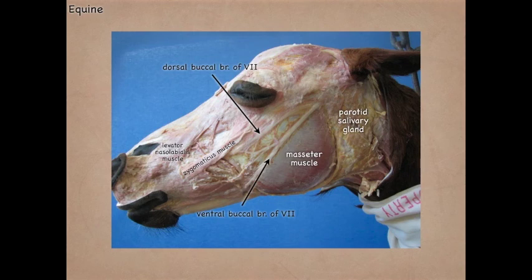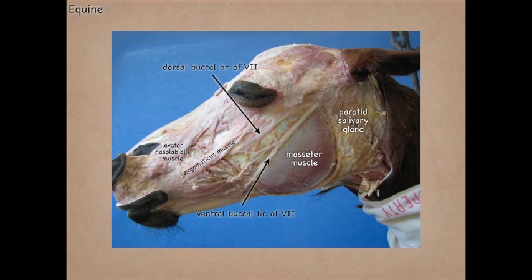You have to remember which way the deviation of the philtrum is going to occur — towards or away from the side of the lesion. It's going to occur away from the side of the lesion because that side the muscle doesn't have tone, and so it's going to be pulled to the unaffected side because that muscle still has tone.